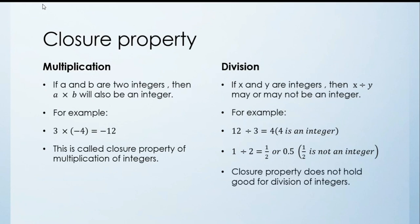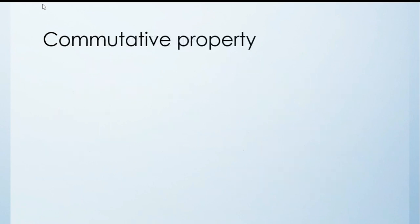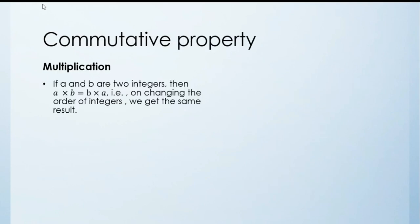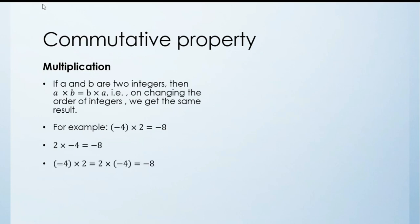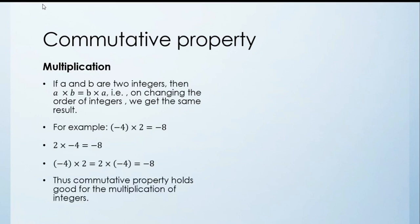Commutative property — Multiplication. If a and b are two integers then a multiplied by b is equal to b multiplied by a. Changing the order of integers gives the same result. For example, minus 4 multiplied by 2 gives minus 8, and when we change the order the answer is still minus 8. Thus commutative property holds good for multiplication of integers.